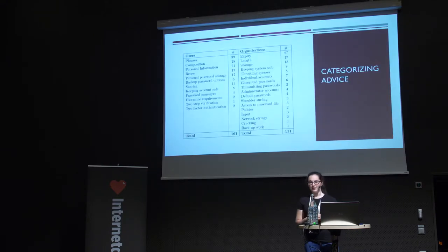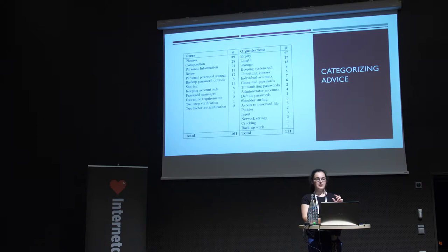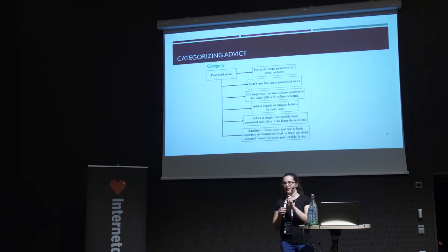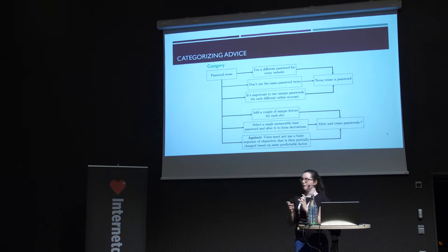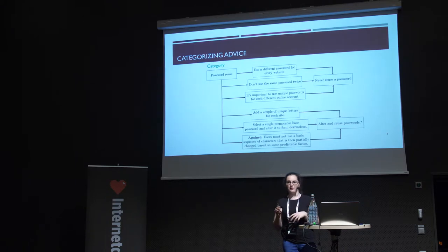We ended up with 29 different categories of password advice, divided into what's aimed at users and what's aimed at organizations. Within each category, it wasn't always saying the same thing. For example, in password reuse, there were six pieces of advice that we summarized into two statements: the first three say 'use a different password for every website' — never reuse a password — and the last three say 'add a couple of unique letters for each site' — alter and reuse passwords.